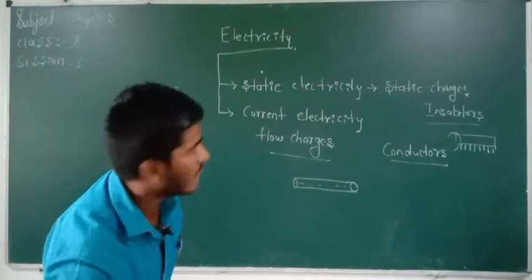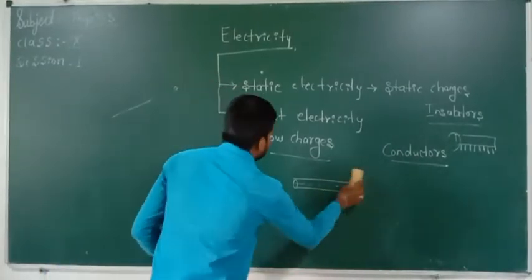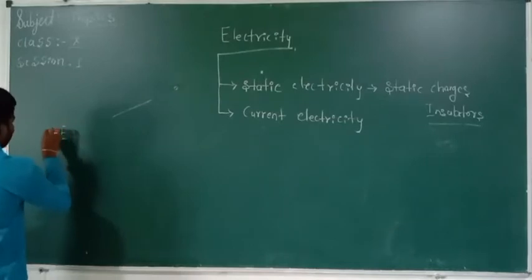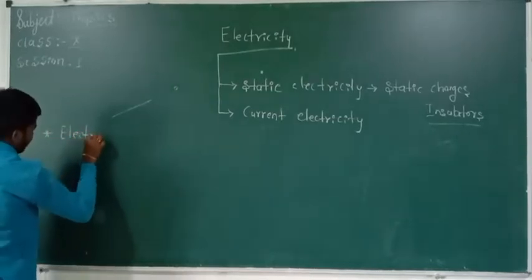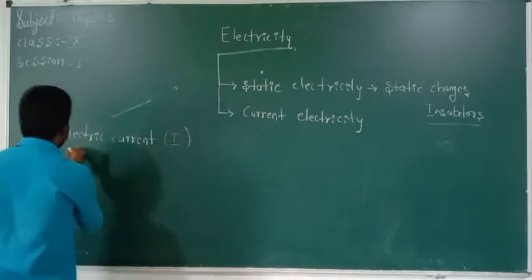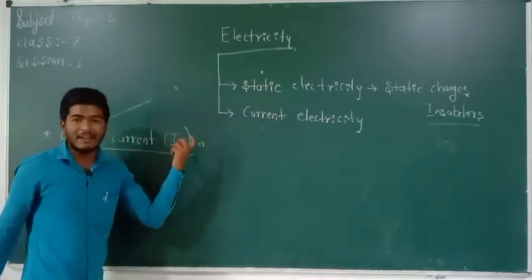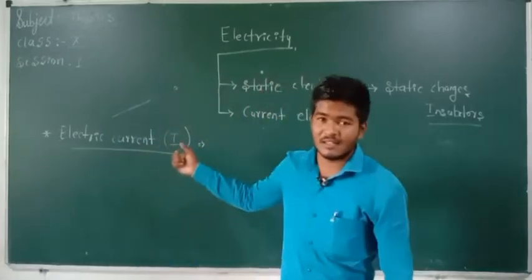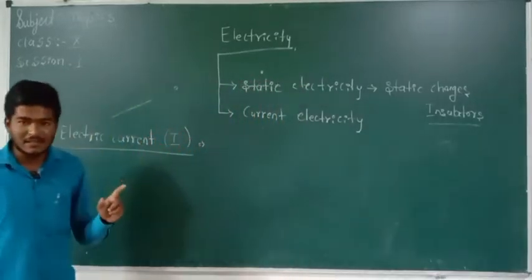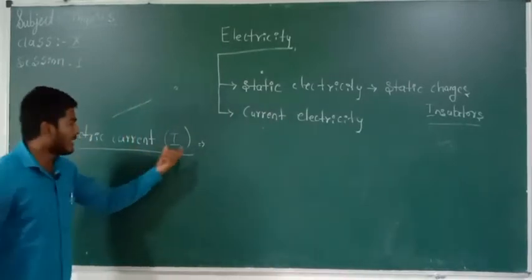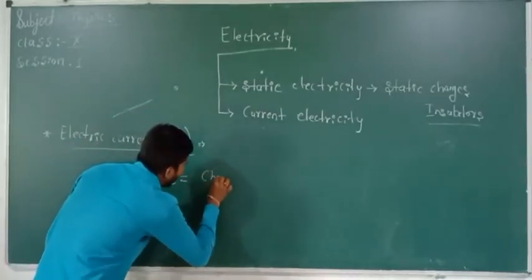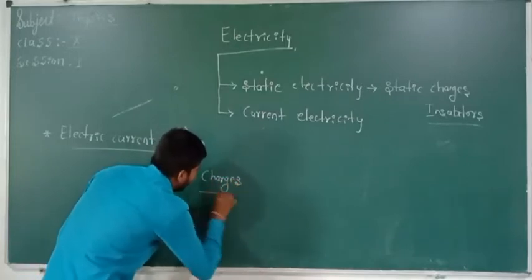Now we are going to study about current electricity. Electric current is denoted by the letter capital I. The rate of flow of electric charges in a unit time is called electric current. That is, I is equal to the flow of charges divided by time T.